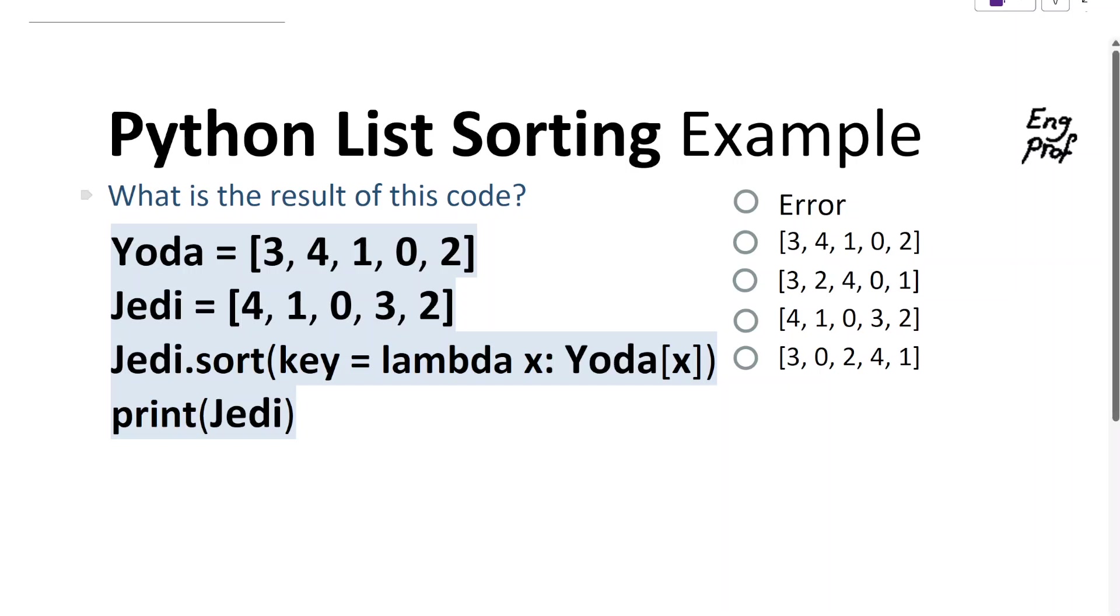In this Python list sorting example, what is the result of running this code? Will we get an error, or will it be one of these multiple choices presented here?